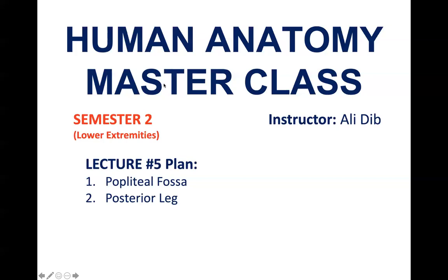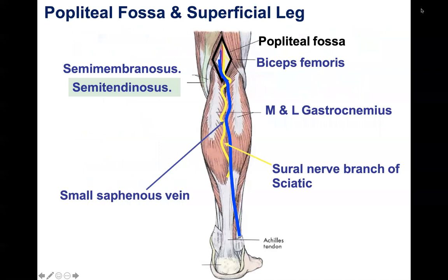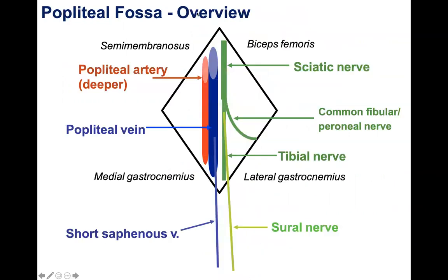Let's get into lecture five. Let's talk about the popliteal fossa. When you hear popliteal region or popliteal fossa, remember that fossa means an indentation — like we saw in the scapula with the supraspinous fossa and infraspinous fossa. The popliteal region is the back of the knee.